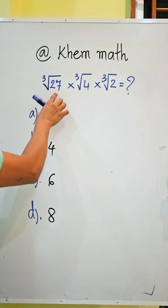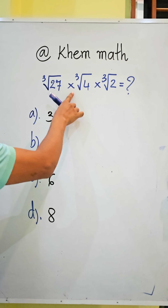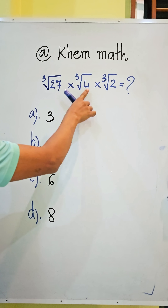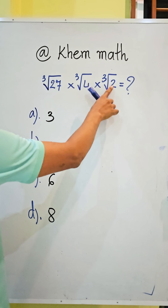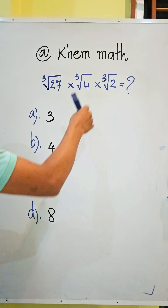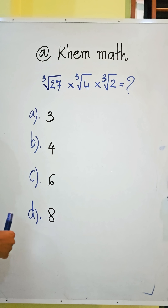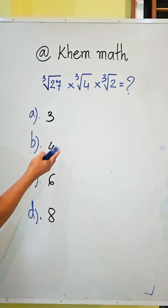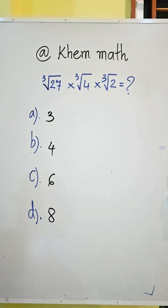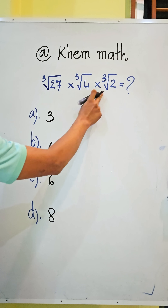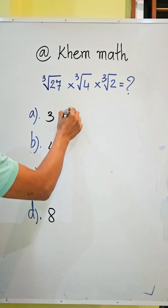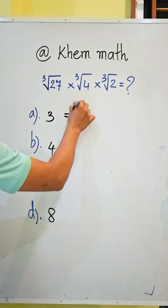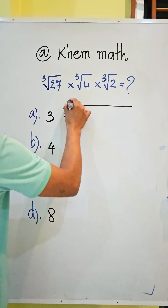Cube root of 27 times cube root of 4 times cube root of 2 — what is the value of this expression? Our answer choices are 3, 4, 6, or 8. Which one is the answer? So look, this is equal to the cube root of...